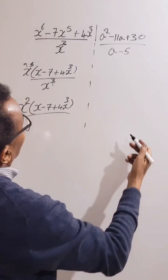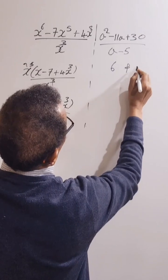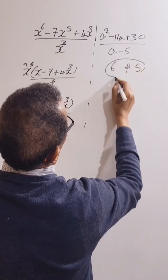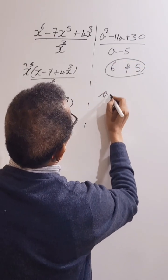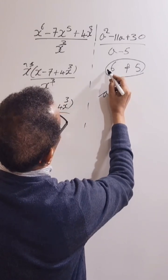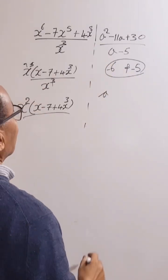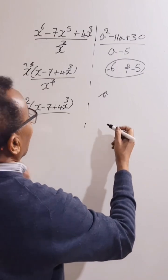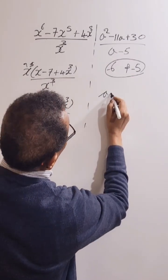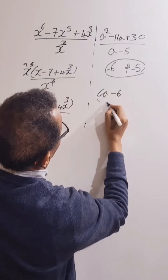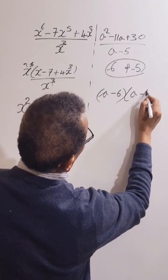Okay, so let's take six and five. Both must be negative to give us negative 11, and when multiplied they give us positive 30. So we have a take away six, times a take away five.